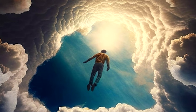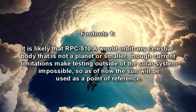The victim will appear to float in place, though in actuality the victim — now designated RPC-510A — has begun to orbit the Sun. It is likely that RPC-510A would orbit any celestial body that is not a planet or smaller, though current limitations make testing outside of the solar system impossible. So as of now, the Sun will be used as the point of reference.